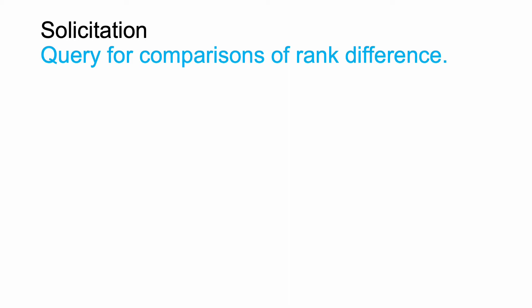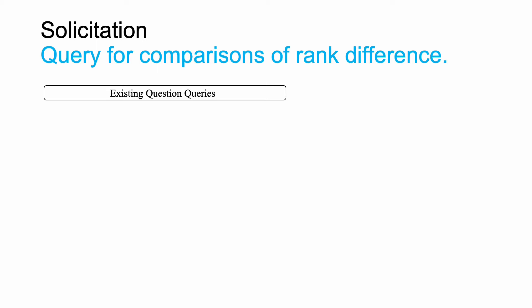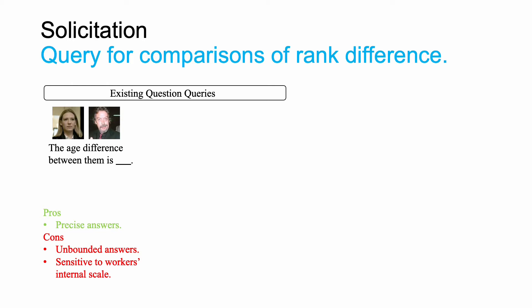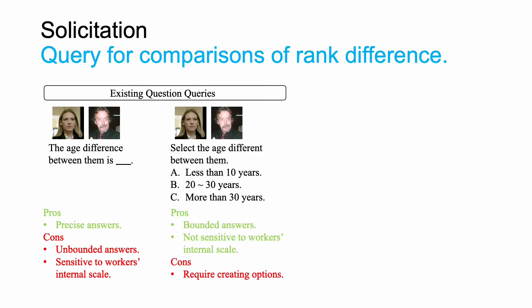Let's consider how to get answers for rank difference. First, let's think about two existing ways to get answers. You may ask workers to input numbers directly. The advantage is that you can get precise answers if your workers are experts who answer carefully. The disadvantages are twofold: on the one hand, the range of answers can be very large — some workers might input very large numbers while others input very small numbers, so you may need many samples for the same pair to get a reliable answer. On the other hand, it is reported that numerical answers are subject to workers' internal scales, which differ from worker to worker. Alternatively, you can create some options and ask workers to select one, which overcomes the previous disadvantages but requires manually creating options, which requires careful examination of the data and is thus time-consuming.